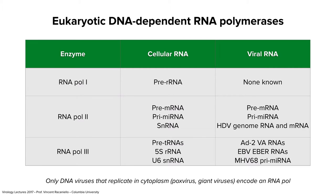The cell has enzymes that do transcription. These are called DNA-dependent RNA polymerases — RNA pol 1, 2, and 3. There are three different enzymes in our cells that make RNA from DNA templates.